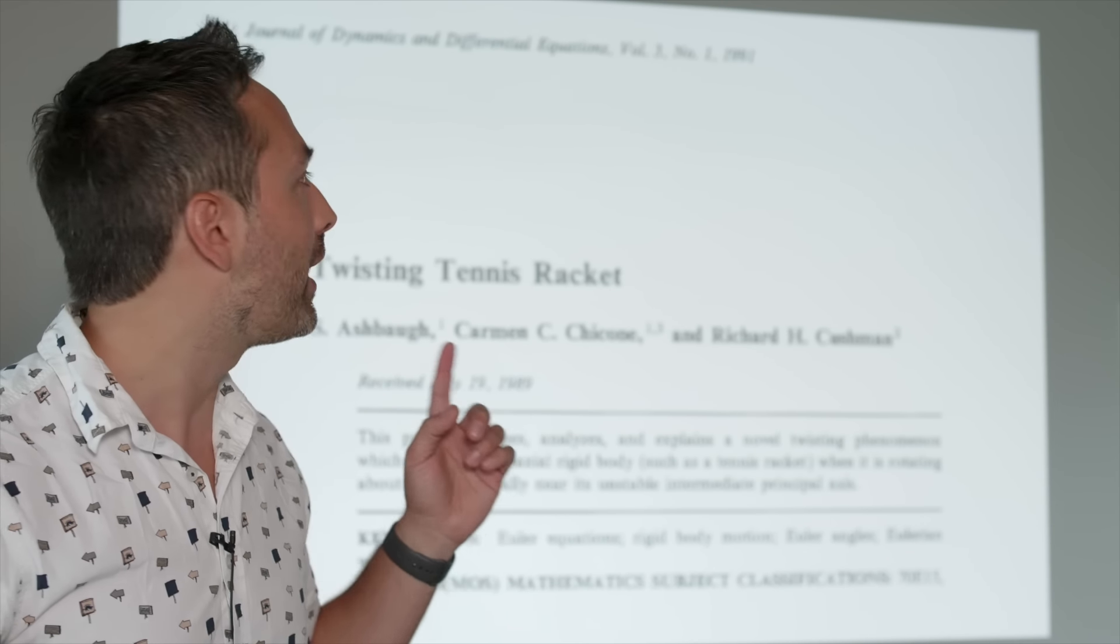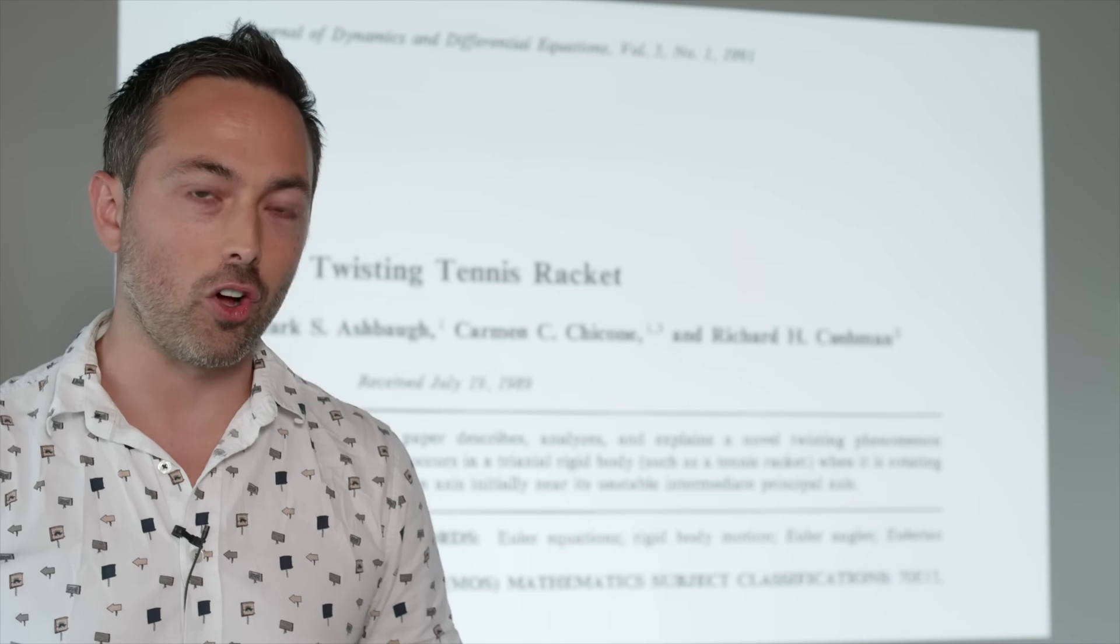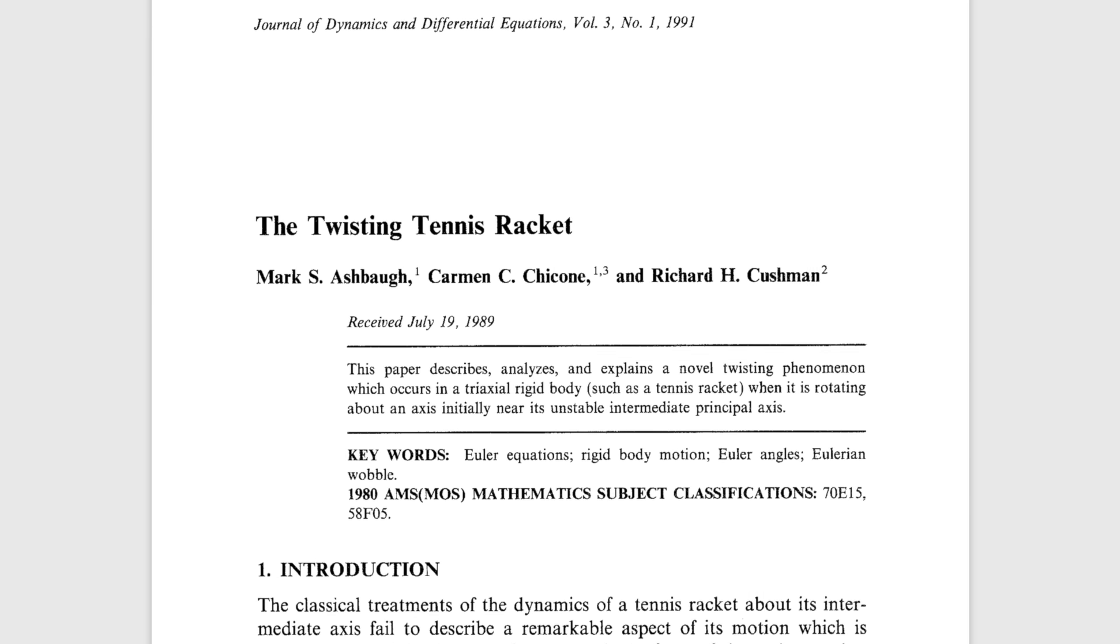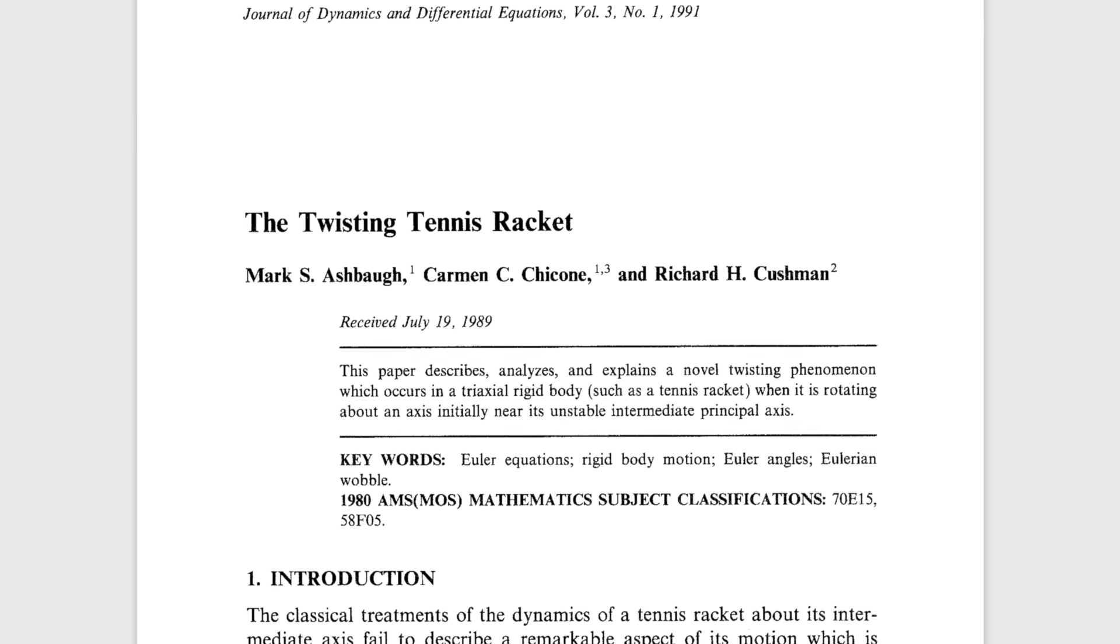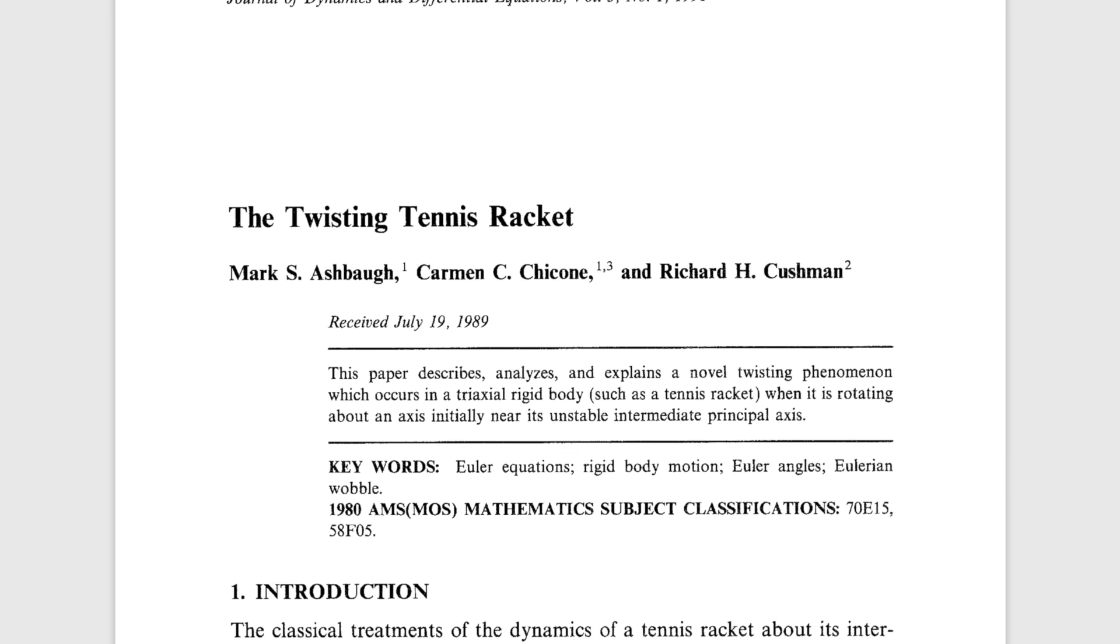Why the secrecy? Well that is what we're going to find out. Six years later, in 1991, a paper was published in the Journal of Dynamics and Differential Equations, called the Twisting Tennis Racket. And although it was related, it of course makes no mention of the secret Janabekov effect.